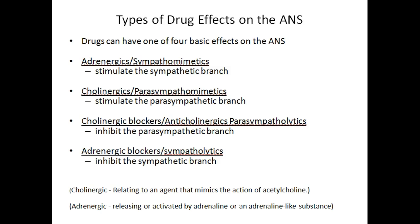Drugs can have one of four basic effects on the autonomic nervous system. They can have an adrenergic or sympathomimetic effect, which stimulates the sympathetic branch. They can have cholinergic or parasympathomimetic effects, which stimulate the parasympathetic branch. They can have cholinergic blocking or anticholinergic or parasympatholytic effects, which inhibit the parasympathetic branch. They can also be adrenergic blockers or sympatholytics, which inhibit the sympathetic branch.